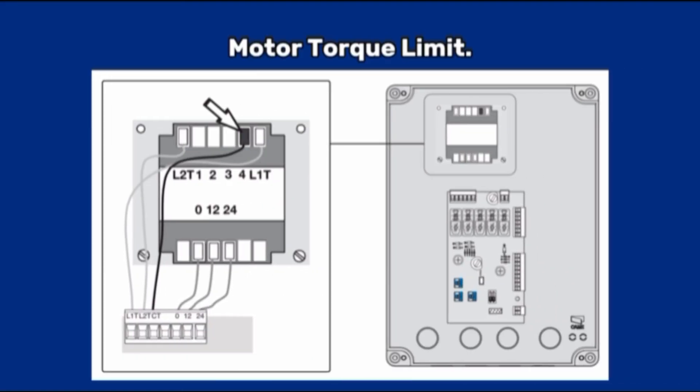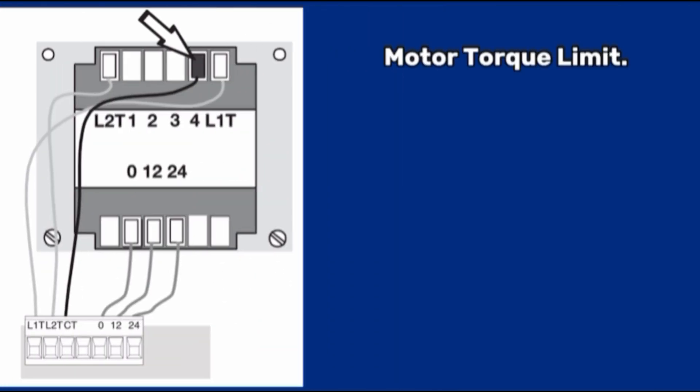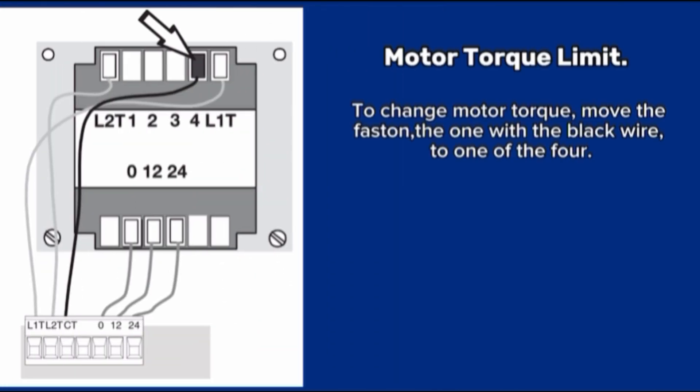Motor torque limit. To change motor torque, move the fasten, the one with the black wire to one of the four. Range settings. One minimum, four is maximum.